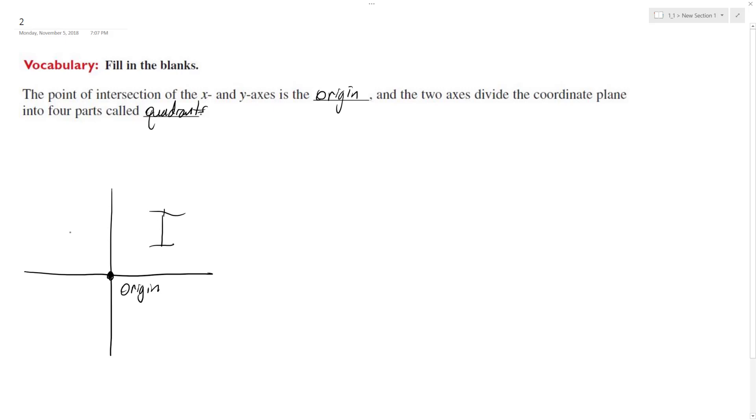Quadrant one, quadrant two, quadrant three, and quadrant four. Because when you do radians, you go counterclockwise on the coordinate plane starting here.